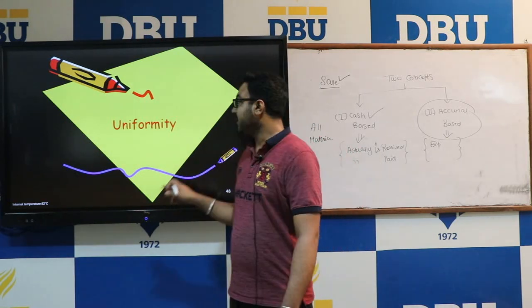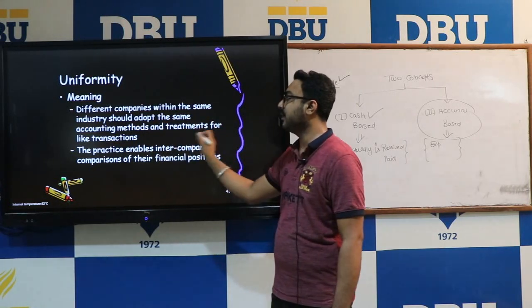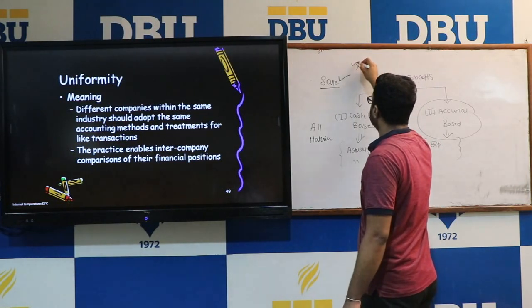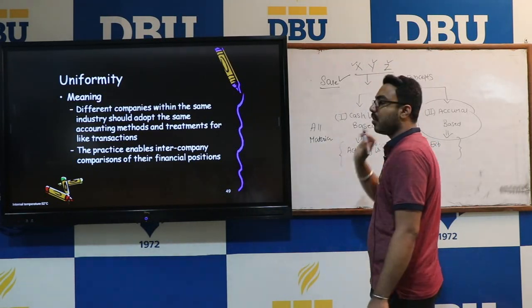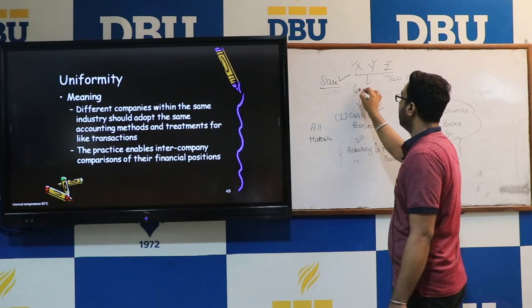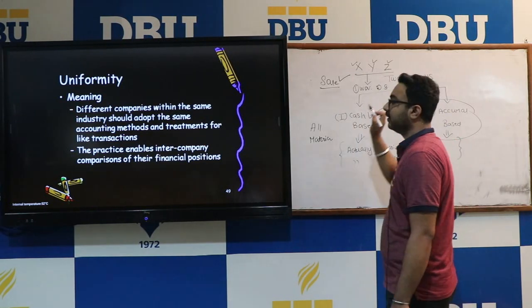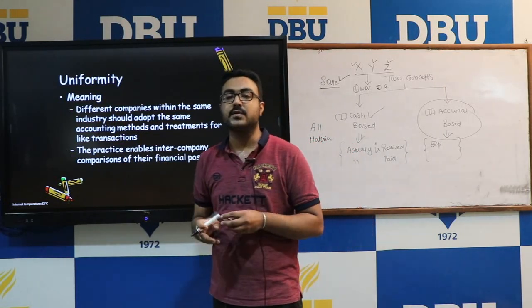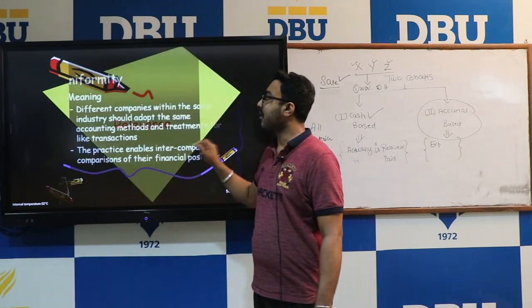The next accounting concept is Uniformity. Uniformity means different companies within the same industry should adopt the same accounting method. For example, companies X, Y, and Z must follow one common method — either the Written Down Value Method or the Straight Line Method for calculating depreciation. This practice enables inter-company comparison of financial positions.